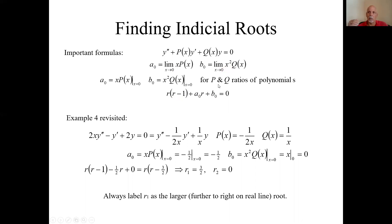Since in my course these p's and q's are always ratios of polynomials, here's how we would compute them. a sub zero just equals x times p evaluated at x equals zero. b sub zero is x squared times q evaluated at x equals zero.